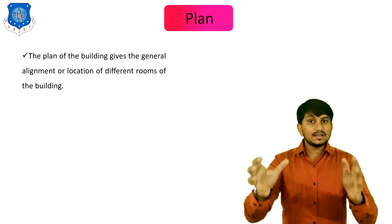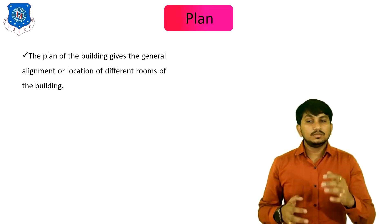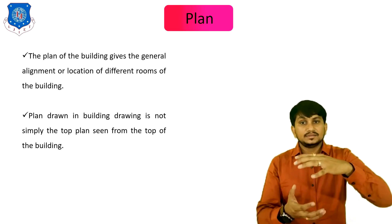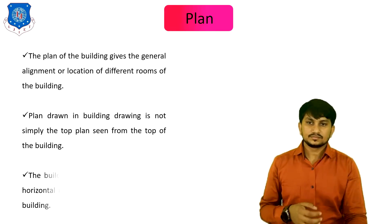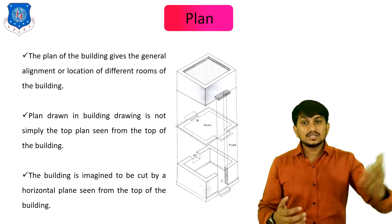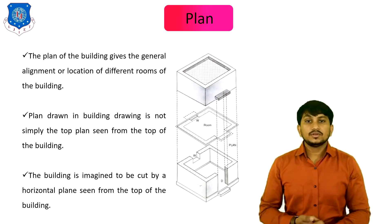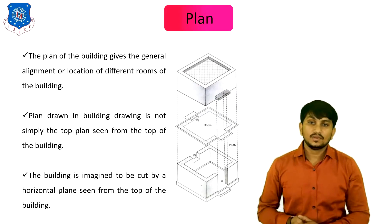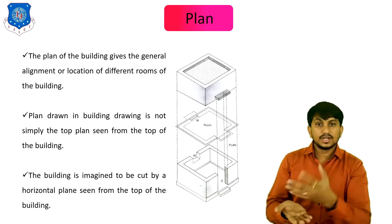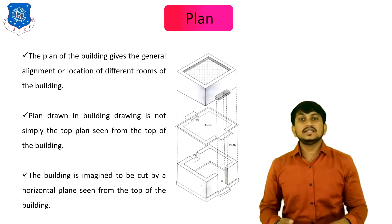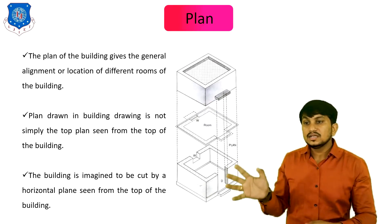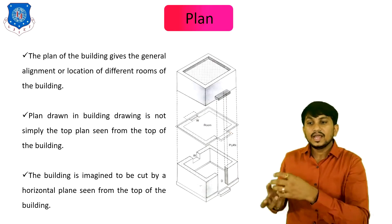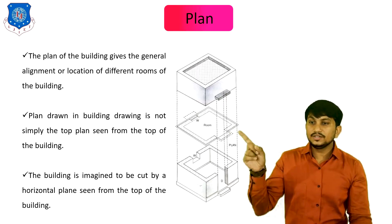The plan of the building gives the general alignment or location of different rooms of the building. The plan drawn in a building drawing is not simply the top view seen from the top of the building. You cut the building in a horizontal portion and see it from the top — this gives you the plan of the building.